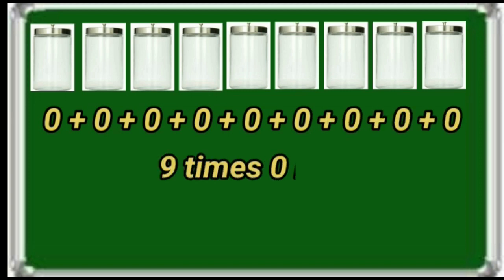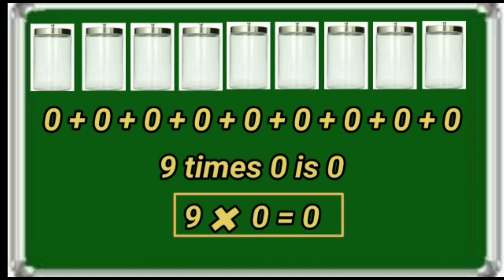Say children, how many jars are there? Yes, right — 9 jars. Each jar has 0 number of lollies. Here 9 times 0 is repeating. Total 0 lollies. 9 times 0 is 0. That can be written as 9 0's = 0.